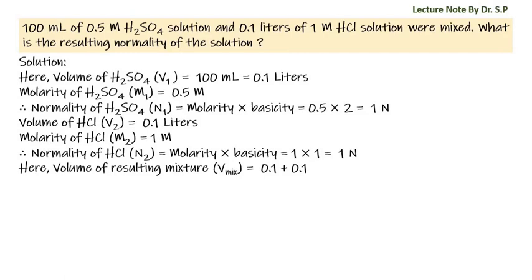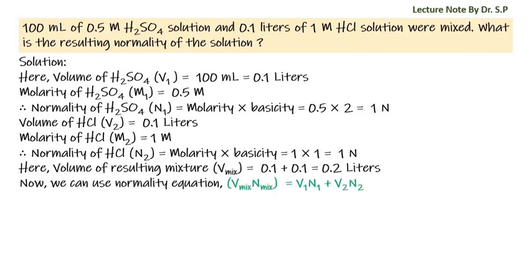The volume of resulting mixture V_mixture is equal to 0.1 plus 0.1, because both sulfuric acid and hydrochloric acid have volume 0.1 liters, so total volume of the resulting mixture is 0.2 liters. Now we can use the normality equation: V_mixture × N_mixture = V1·N1 + V2·N2. In the case where both mixing solutions are the same type, we add their normality and volume as shown on the screen.